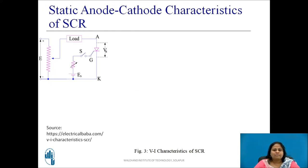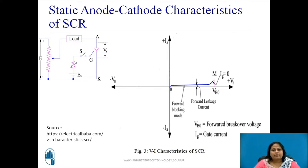Let us see the forward blocking region. In this, anode is made positive with respect to cathode. As explained before, during this state, J1 and J3 are forward biased and J2 is reverse biased. Even though the anode voltage is increased, a very small forward leakage current flows through the device, keeping it in the OFF state only. This region, represented by region OM of the VI characteristics, is known as the forward blocking region.